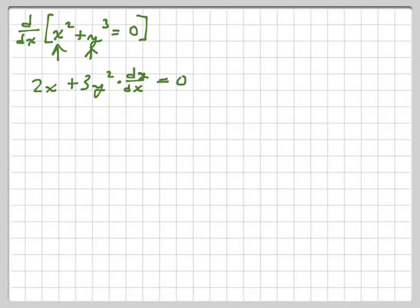So if I wanted to finish this, I have to get the dy over dx alone. So pretty much just you're solving for it. You've got to get rid of the 2x, then we've got to get rid of the 3y squared. So it looks like this. We have 3y squared times dy over dx equals negative 2x.